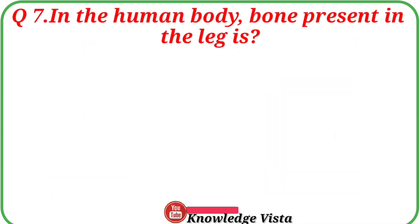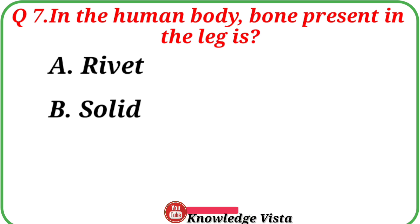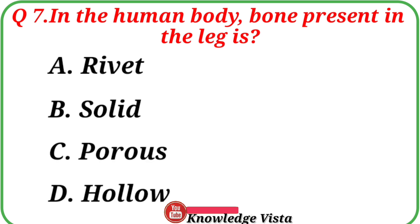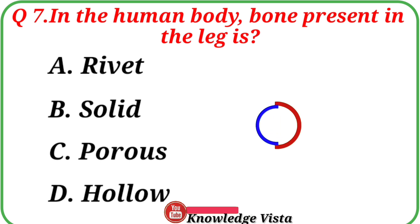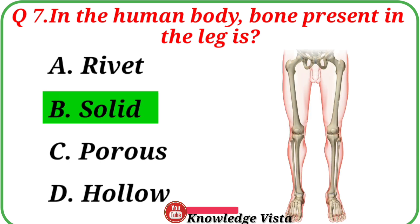Question number 7: In the human body, the bone present in the leg is. Your options are: A. Rivet, B. Solid, C. Porous, D. Hollow. Correct answer is option B, Solid. The bone present in the leg is solid.